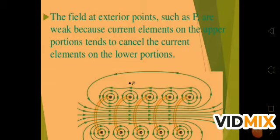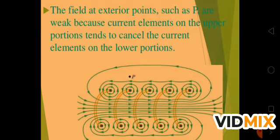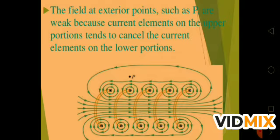At an exterior point P, the field is weak because the current element on the upper portion tends to cancel the current element on the lower portion. That's why there is less net current contribution, and so the field outside the solenoid is weak. At point P, you can see that the magnetic field lines are weaker and fewer in number.